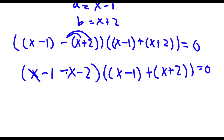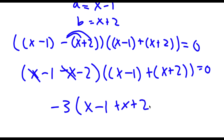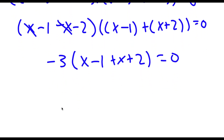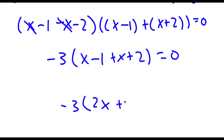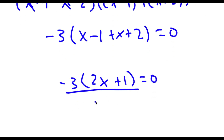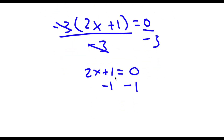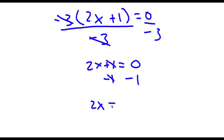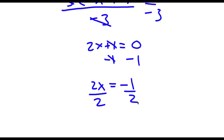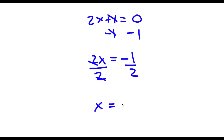Now x minus 1 plus x plus 2 equals 2x plus 1, since x plus x is 2x and negative 1 plus 2 is positive 1. And x minus 1 minus x minus 2 simplifies to negative 3. So I have negative 3 times 2x plus 1 equals 0, which means 2x plus 1 equals 0. Subtracting 1 from both sides gives 2x equals negative 1, and dividing by 2 gives x equals negative one half.